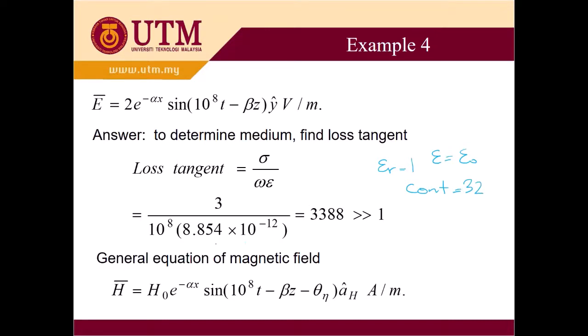So the value is 8.854 times 10^-12. This is basically epsilon naught. So when you calculate, you get the value of loss tangent 3388, which is very big.